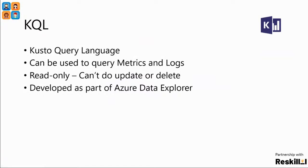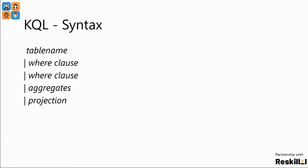The next one is Kusto Query Language (KQL). KQL is used to query the metrics and log analytics database. It performs read-only operations — once data is collected, it performs operations on the collected data in read-only mode. It cannot do updates or deletes. KQL was developed as part of the Azure Data Explorer. The KQL syntax works by first using the table name, then using the pipe symbol to coordinate the queries, applying where clauses to filter records. The result of the first where clause goes as input for the second where clause — it's a funnel operation. With multiple where clauses connected by pipe symbols, data is filtered and the final data is used for aggregation and projections.